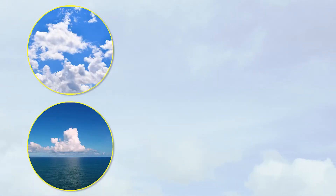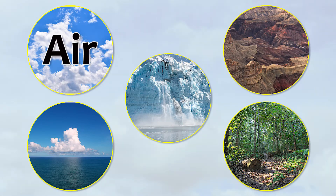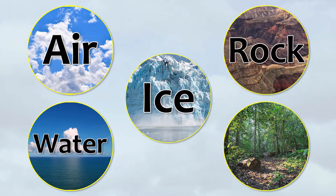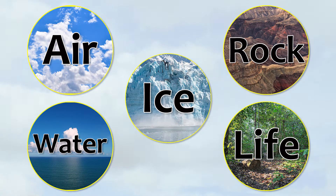In addition to the atmosphere, there are four other parts of our Earth through which this energy moves, and together they create our climate. Air, water, ice, rock, and life — these five parts of our planet make up the climate system.